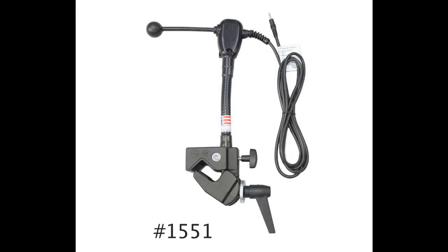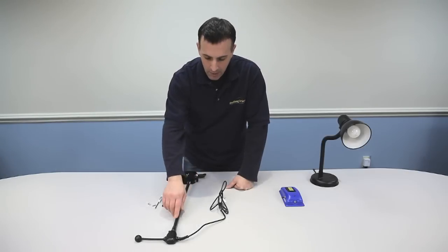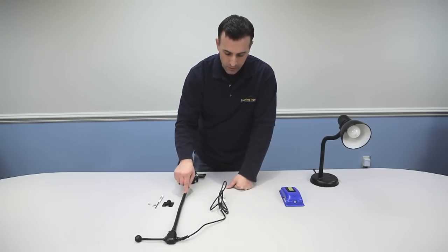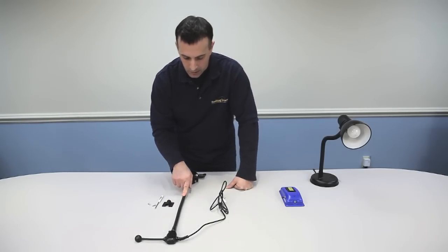Again, same clamp, everything else is the same. The only difference is the length of the gooseneck. In certain applications you may need a shorter switch, but the most popular model is this one, the number 1671 with a 19-inch gooseneck.